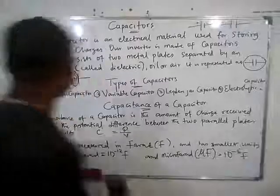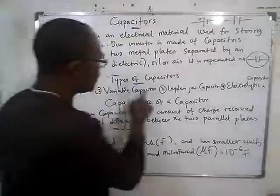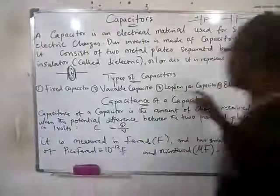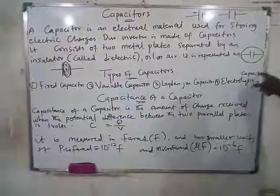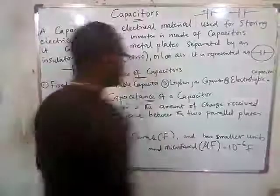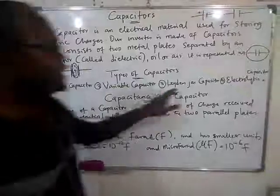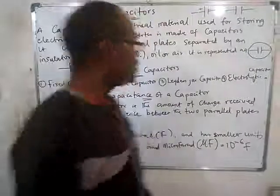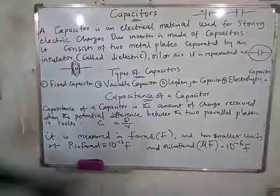We have different types of capacitors. We have the fixed capacitor, the variable capacitor, the electrolytic capacitor, and the electrolytic capacitor. So we have four types: fixed, variable, leading gas, and electrolytic capacitor.